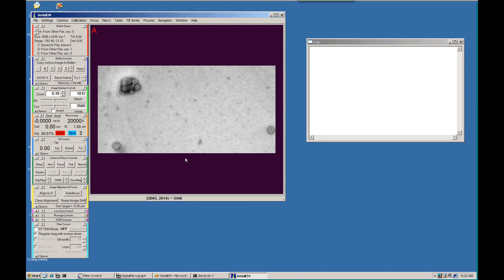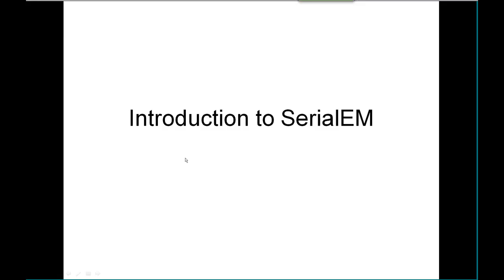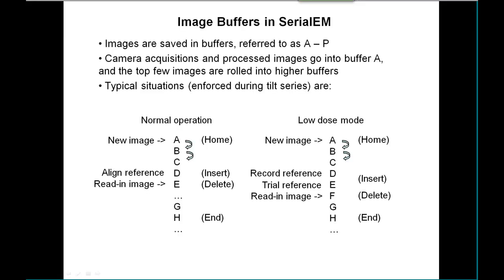Rather than displaying images in multiple windows, we have a single window that displays multiple buffers. You can scroll through the buffers with hotkeys and by other means. These buffers are referred to as A through P.